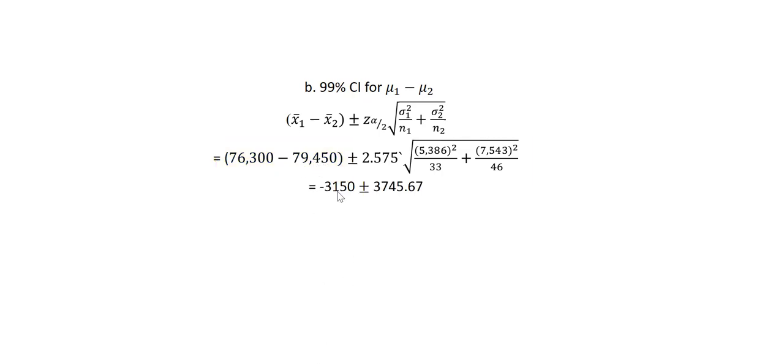When we compute this, the difference between the sample means is negative 3,150 and the margin of error is 3,745.67. We use these values to compute the upper confidence limit by taking the difference between the sample means plus the margin of error and the lower confidence limit by taking the difference between the sample means minus the margin of error.